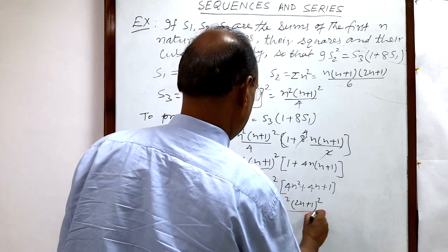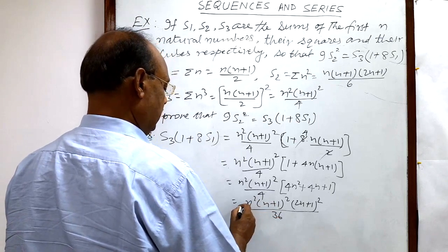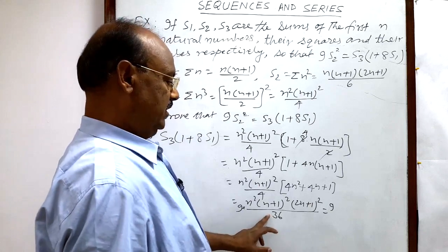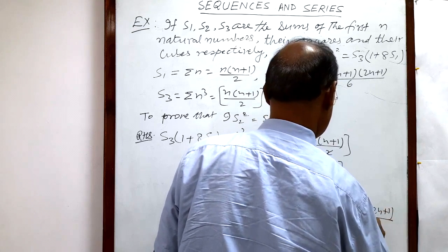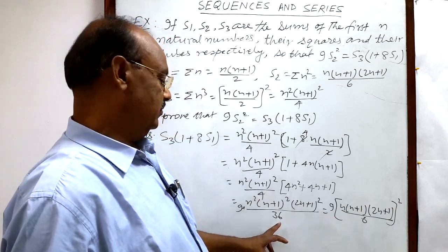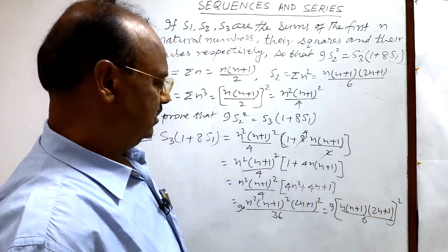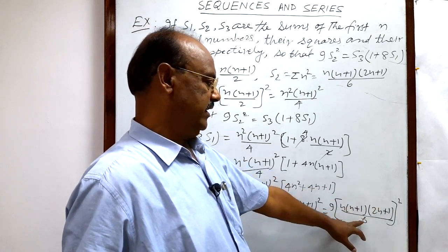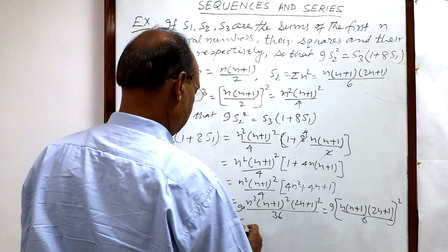Now we multiply numerator and denominator by 9, so the denominator becomes 36. This allows us to write it as 9 times [n(n+1)(2n+1)/6]², since 6² is 36. Notice that n(n+1)(2n+1)/6 is exactly S2, so we have 9 S2 squared.